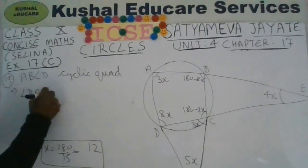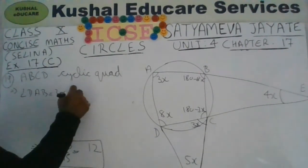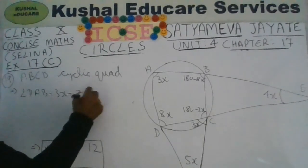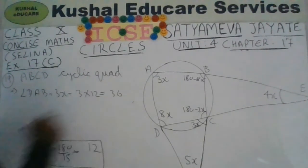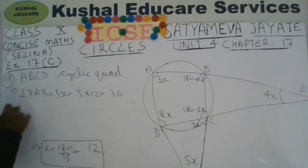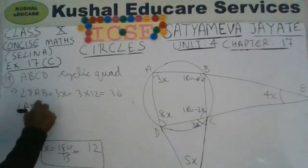If you know the value of x, then you can calculate all the interior angles of quadrilateral ABCD. Each angle is expressed in terms of x, so you can easily calculate all the interior angles of ABCD.